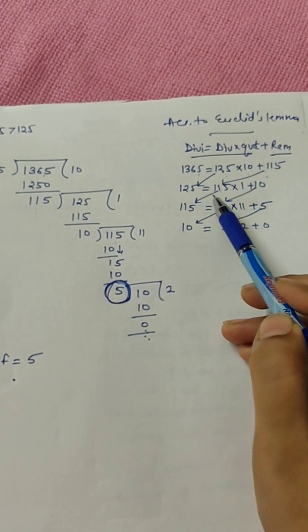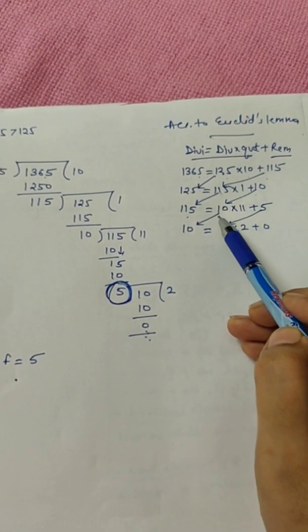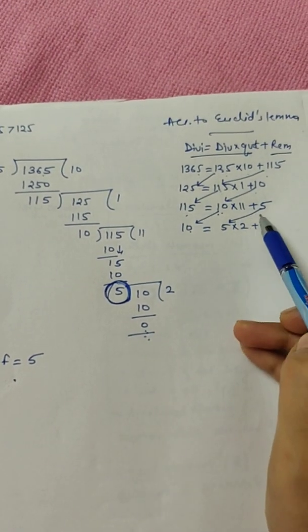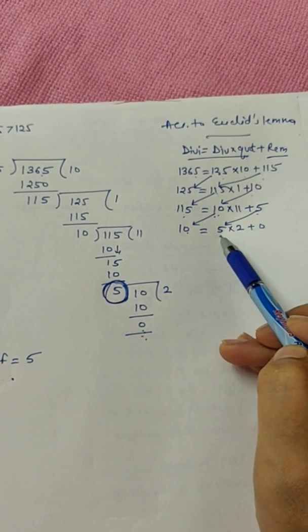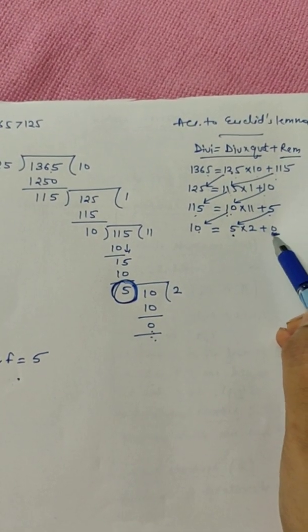Similarly, in next step, your divisor is becoming dividend and your remainder is becoming divisor. And again, your divisor is dividend and your remainder is your divisor, and you perform till your remainder comes out to be zero.